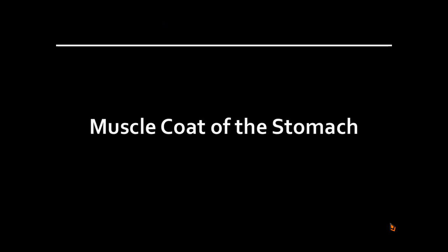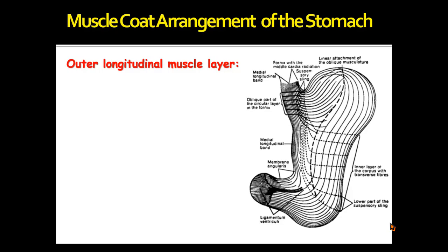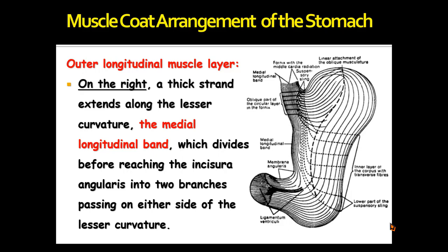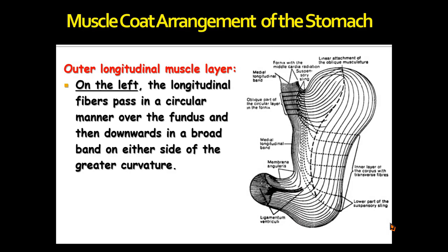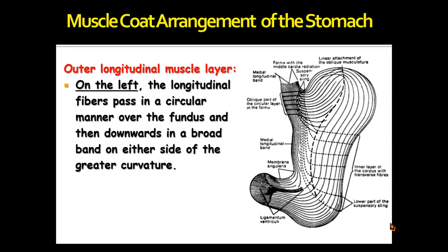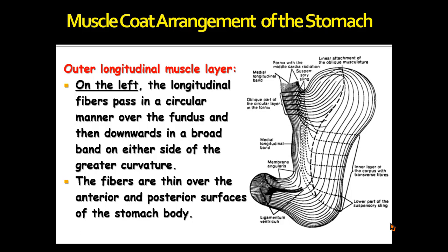To start with the arrangement of the muscle coat of the stomach: like any other part of the gastrointestinal tract, the muscle fibers are arranged as follows — we have an outer longitudinal muscle layer and an inner circular muscle layer. For the outer longitudinal muscle layer of the stomach, on the right side they form a thick strand that extends along the lesser curvature, called the median longitudinal band, which divides before reaching the incisura angularis into two branches passing on either side of the lesser curvature. On the left side, the longitudinal fibers pass in a circular manner over the fundus and then downwards in a broad band on either side of the greater curvature. The fibers are thin over the anterior and posterior surfaces of the stomach body.